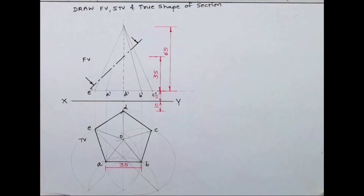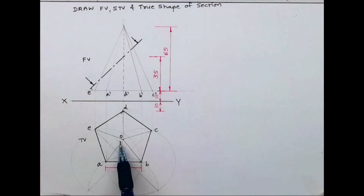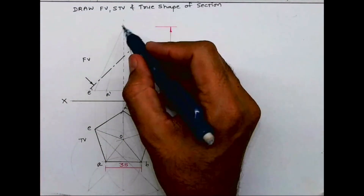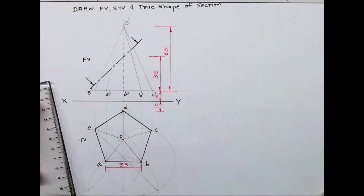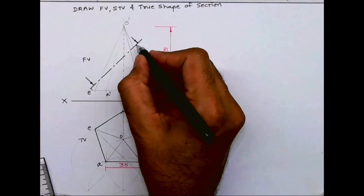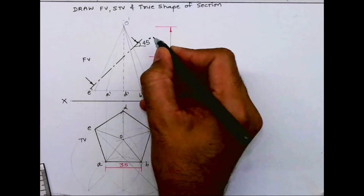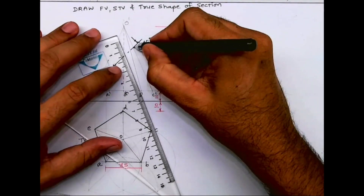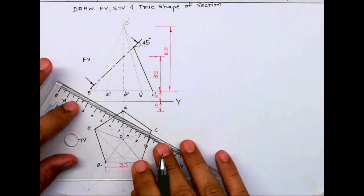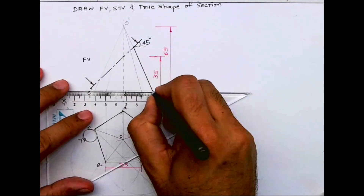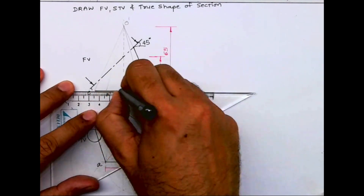Welcome to technical drawing. Today we'll draw the front view, sectional top view, and true shape of a section of this pentagonal pyramid. The side is 35 and the labeling is done A, B, C, D, E with dash in front view. This is the cutting plane line, which is inclined at 45 degrees. The height is 35 from the center, and the remaining portion after the cut will be dark.